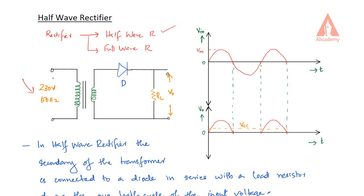The input is 230VAC and the transformer secondary provides the voltage to the rectifier. During the positive half cycle, the transformer secondary gives positive polarity, so the positive terminal is connected to the P-region of the diode and this is the N-region. So the diode is forward biased during the positive half cycle.